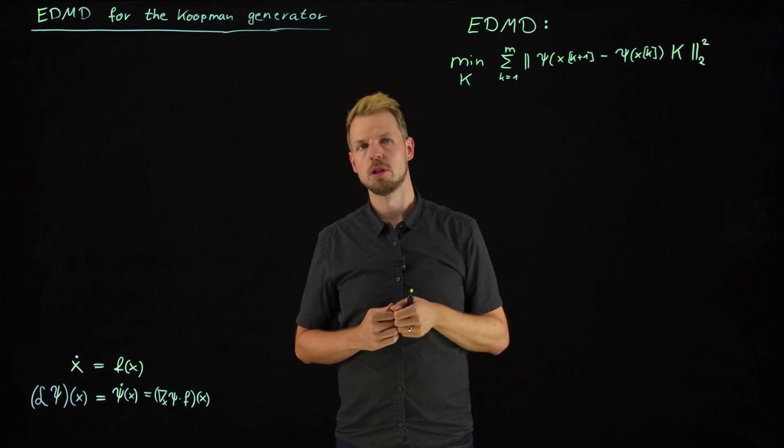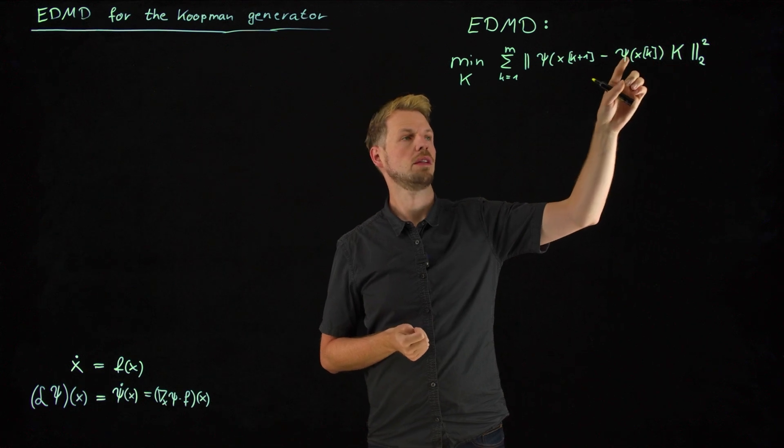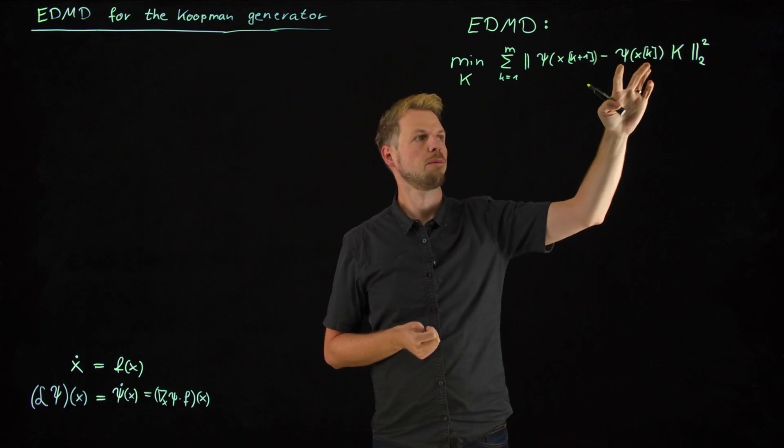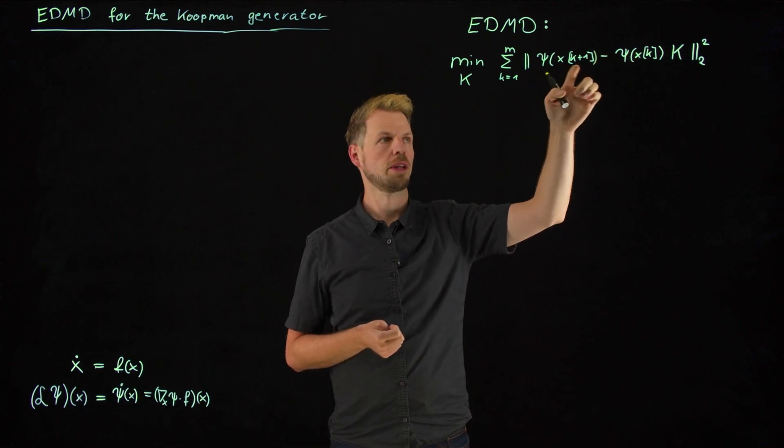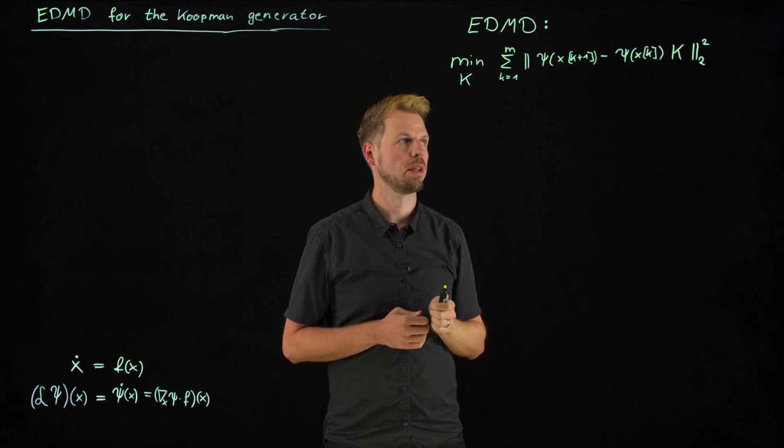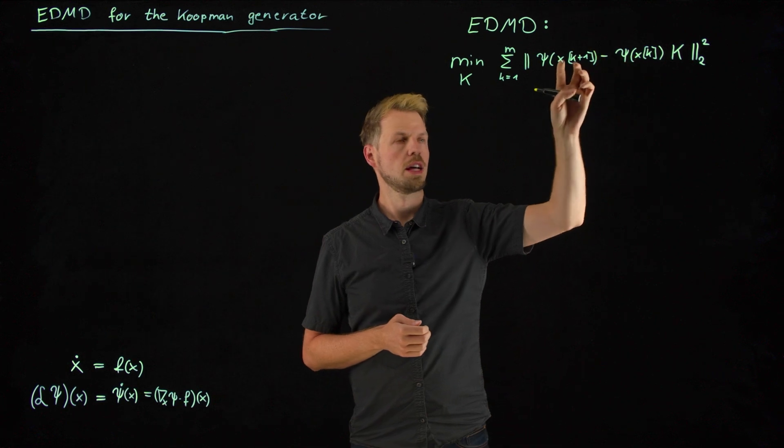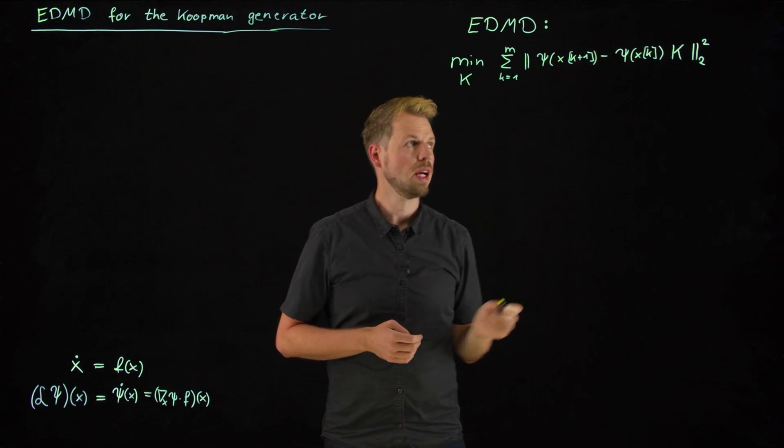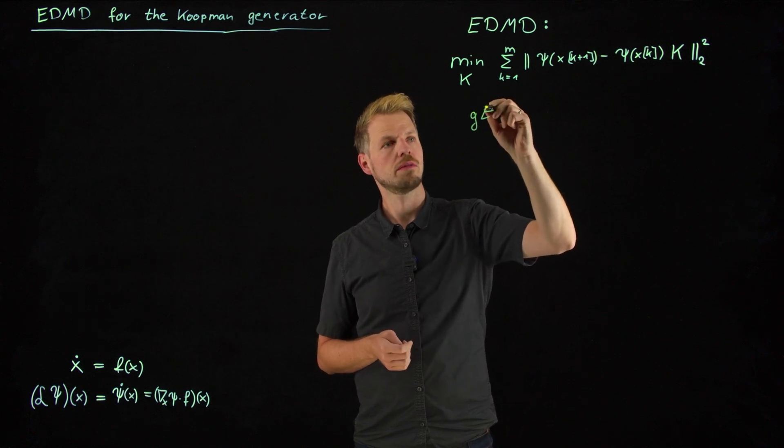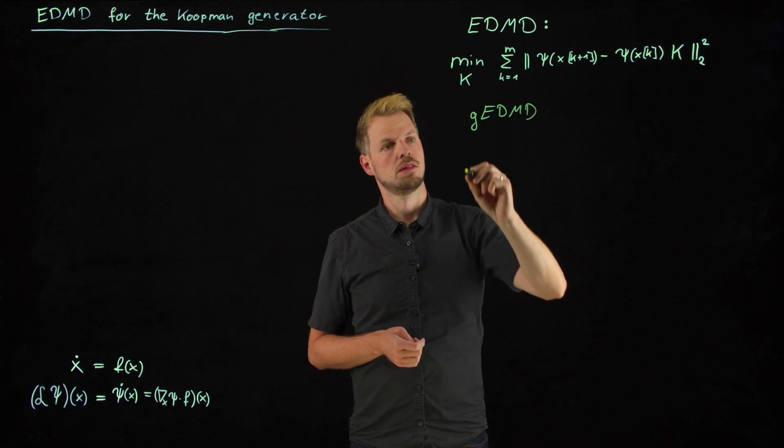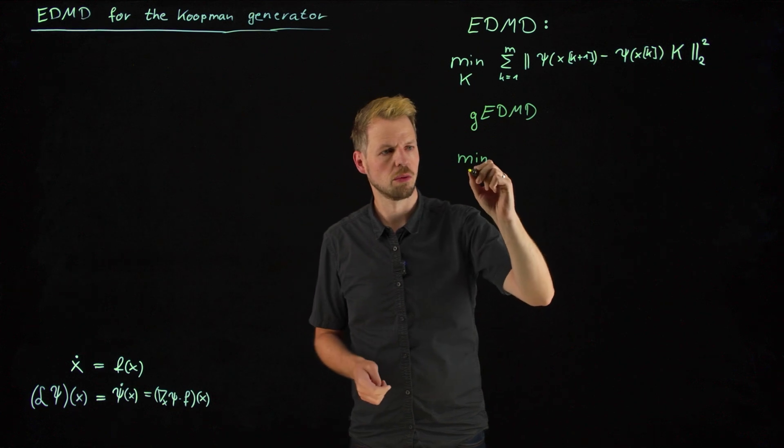So this is the EDMD optimization problem, so the multivariate regression problem, where we want to find the matrix so that this matrix maps the observable at time step k to the observable at time step k plus one in the best possible way. So it doesn't have to be one long time series, but it's always the case that this is a mapping one time step ahead. And so in a very similar manner, we can now formulate the generator version of this simply by finding a matrix approximation, not of the Koopman operator, but of this generator. And so we're going to call this L.